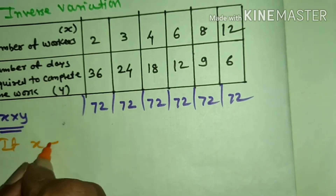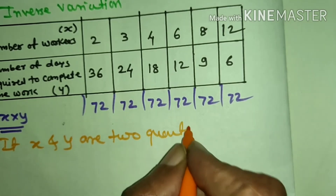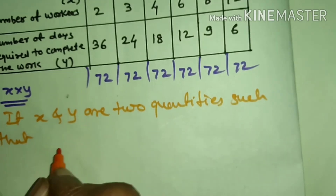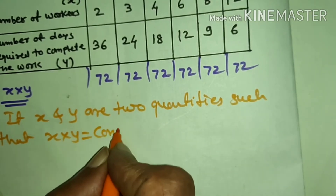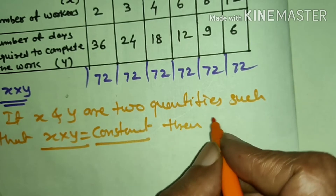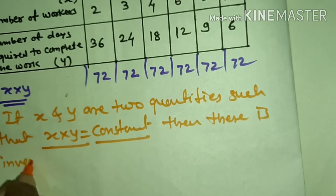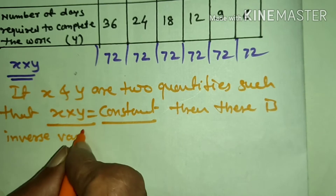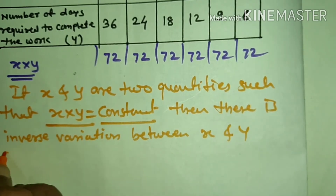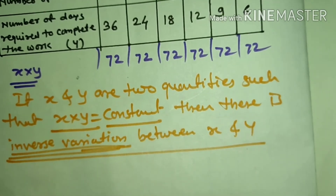If x and y are two quantities such that x into y is equal to a constant, then there is inverse variation between x and y. Whenever x into y is constant, we say there is inverse variation between x and y.